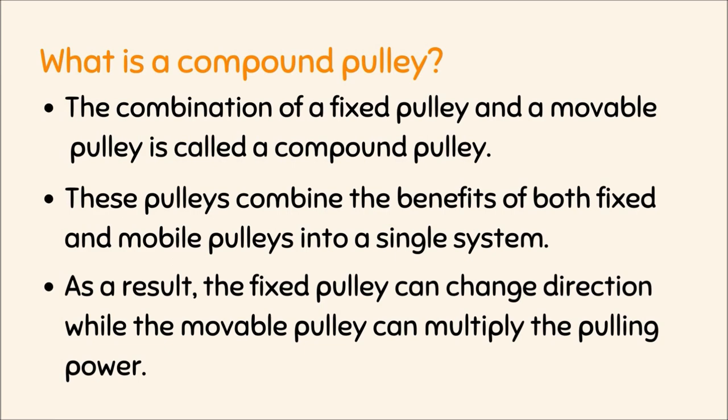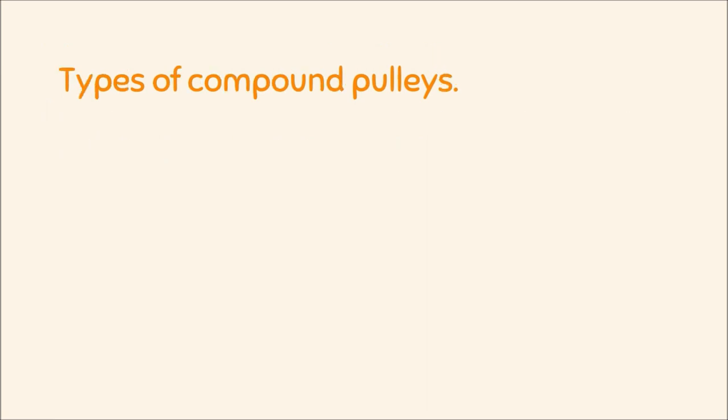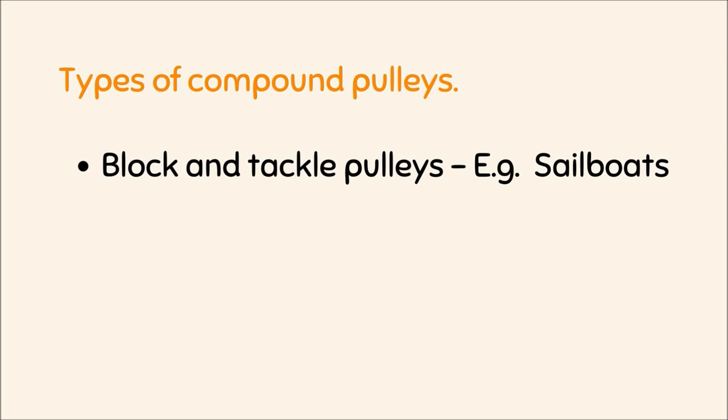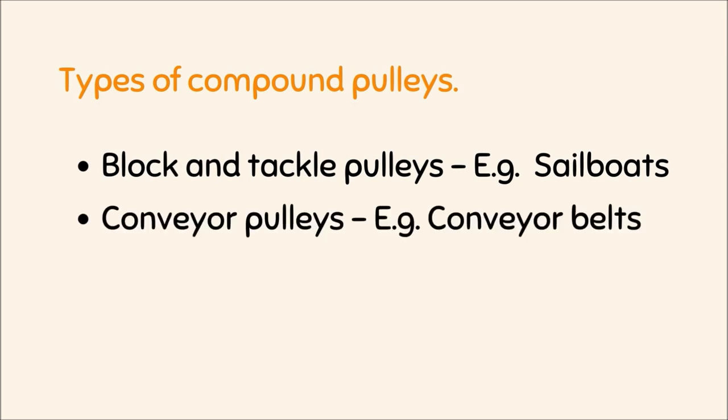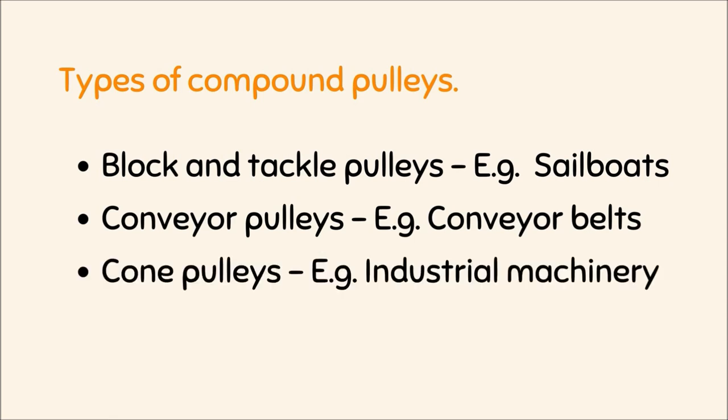In a compound pulley, the fixed pulley can change direction while the movable pulley can multiply the pulling power. Types of compound pulleys include lock and tackle pulleys — for example, sailboats — conveyor pulleys — for example, conveyor belts — and cone pulleys — for example, industrial machinery.